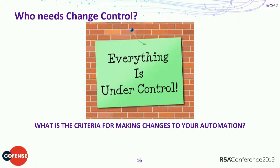Change control: as you start to create processes you want to automate, how do you lock down those scripts? You need to understand who's making changes to them. Your auditors will want to know how you ensure you're not missing something. Make sure you have criteria around how you capture changes and who's changing what. I saw a situation where somebody had set up a rule really nicely, but someone kept turning it off and back on — making sure you can manage that change control is really important.